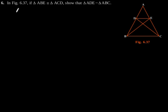Exercise 6.3, question number 6. In figure 6.37, if triangle ABE is congruent to triangle ACD, show that triangle ADE is similar to triangle ABC.